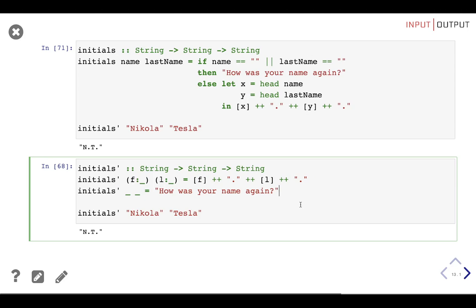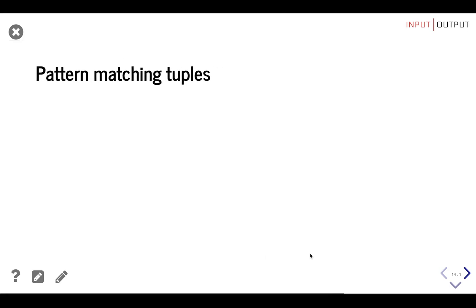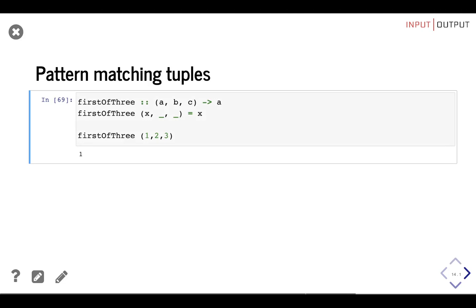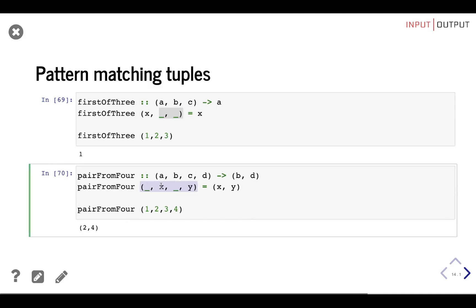Now let's see how pattern matching makes our lives easier with tuples. Previously we could only get elements inside a pair using `fst` and `snd` — first and second. If you needed a value from a tuple bigger than two elements you were in a pickle. But now that you're a pattern matching magician, the sky is the limit. Want to extract the first element of a three-element tuple? Just define the function, pattern match for the first element, and ignore the rest. Want to create a pair with the second and fourth elements of a four-element tuple? Same approach — pattern match for those and ignore the rest.